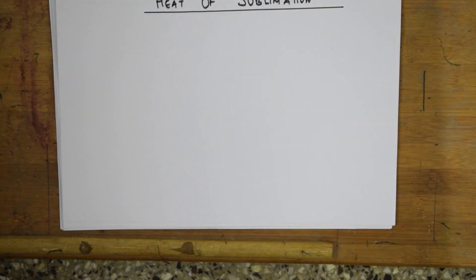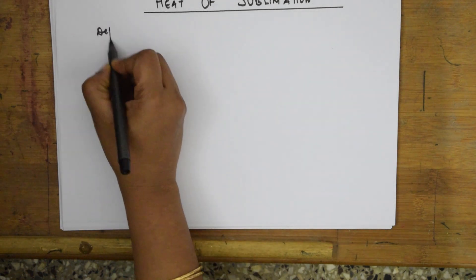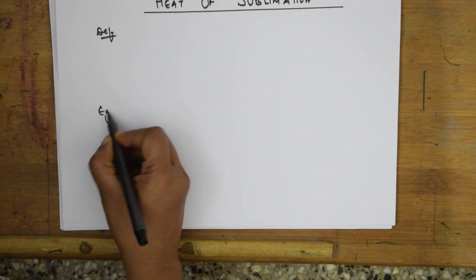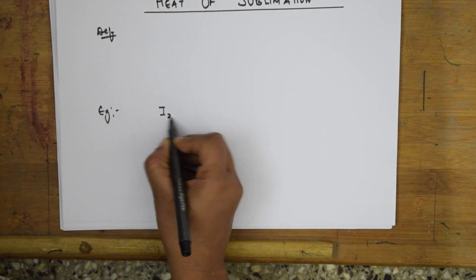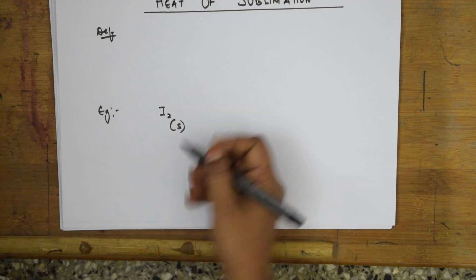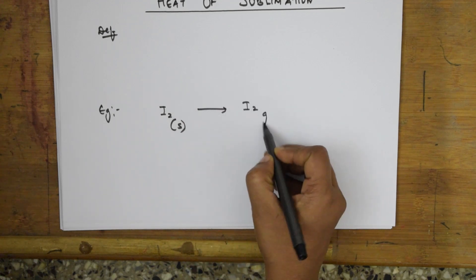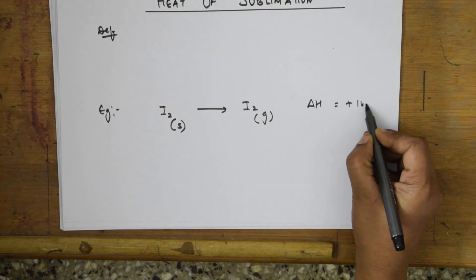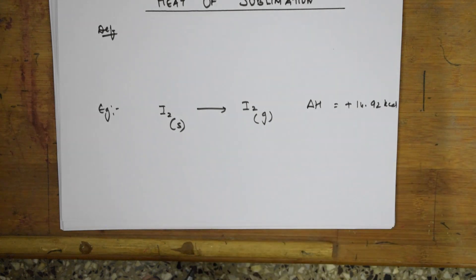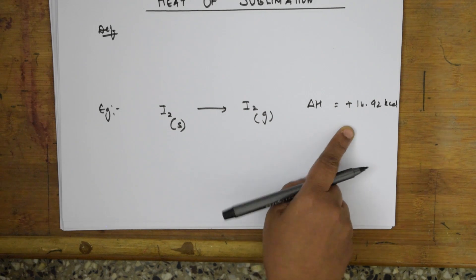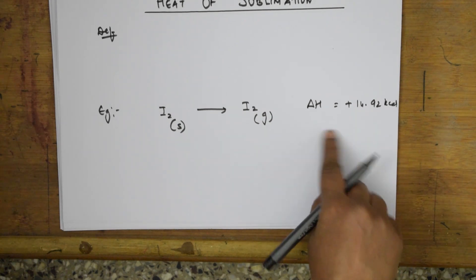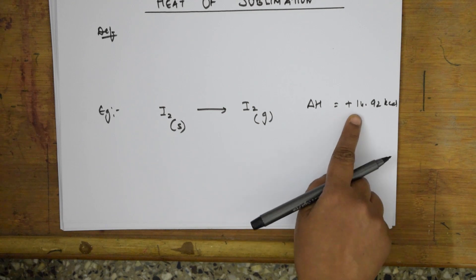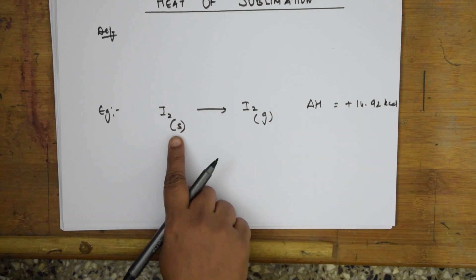The next type is heat of sublimation. Let us take an example — iodine. Iodine in solid state is converted directly to iodine gas. During this process, delta H is endothermic at 14.92 kilocalories. So energy is absorbed and iodine converts directly from solid to gas without passing through the liquid state.